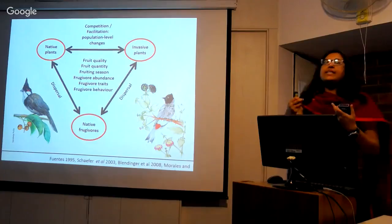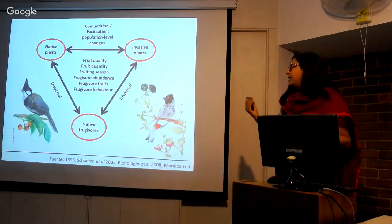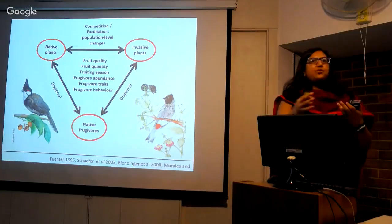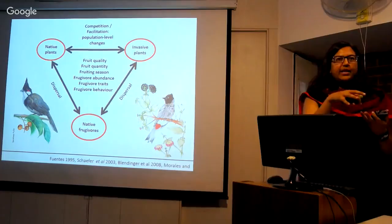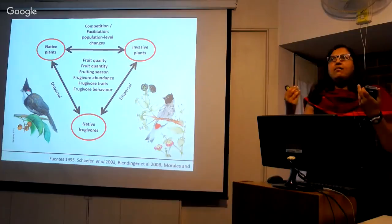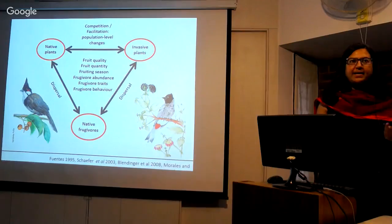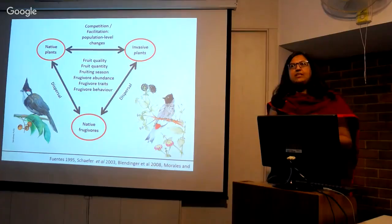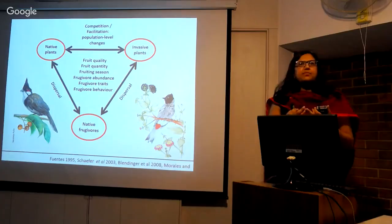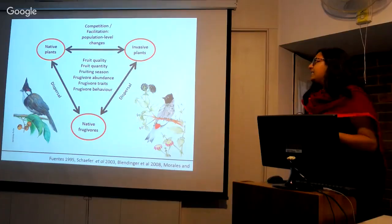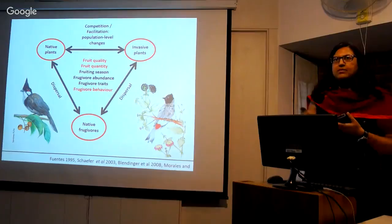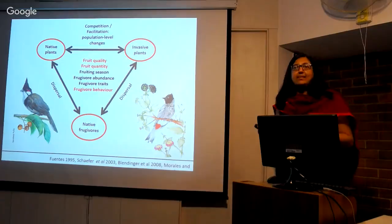Frugivore behavior is another crucial aspect determining whether a seed gets dispersed or not. A frugivore may choose to spend lots of time searching between food patches, or a lot of time within a patch. It may eat a fruit and excrete it very fast or very slow, and depending on how much it moves during that time, determines how far a seed gets from the parent plant. In the following study, we look at the effects of fruit quality, fruit quantity, and frugivore behavior on this particular interaction — on how the invasive plant Lantana camara is affecting native plant and native frugivore interactions.